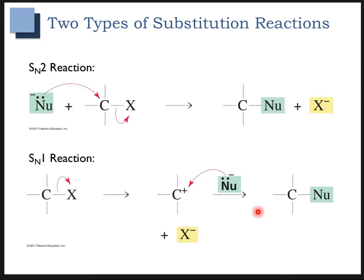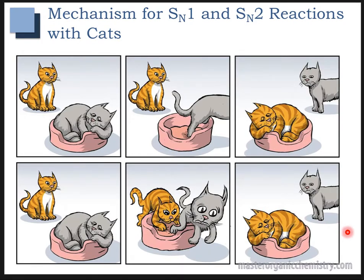So you can think about this in terms of cats. The top example here is the example of an SN1 substitution reaction, where orange cat here waits for gray cat to leave. Once gray cat has left, orange cat takes its bed.